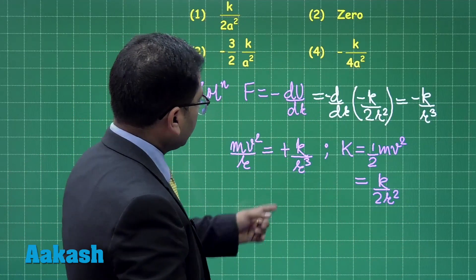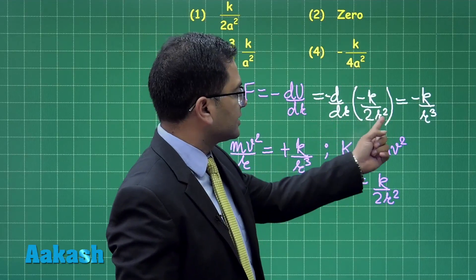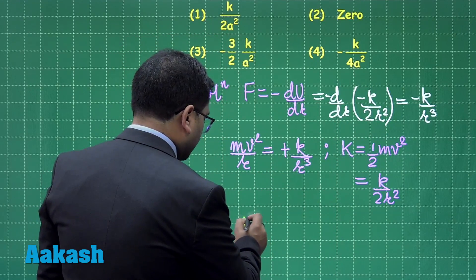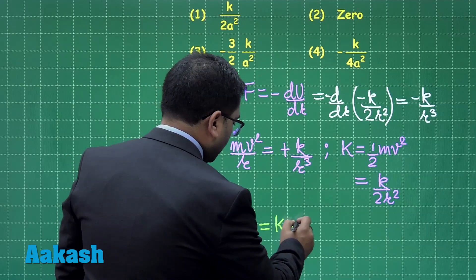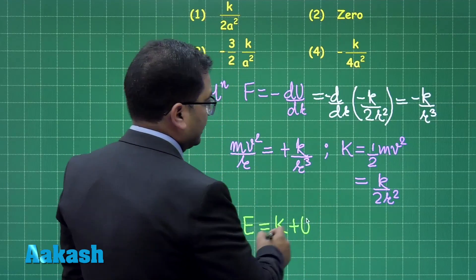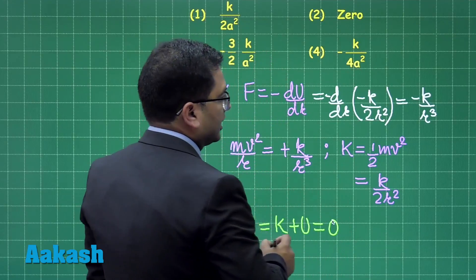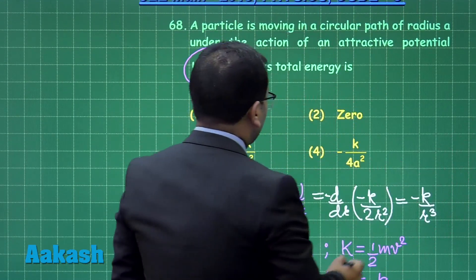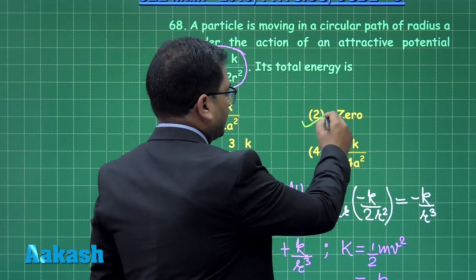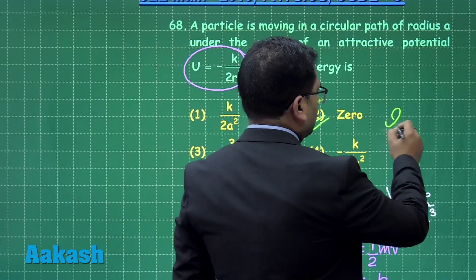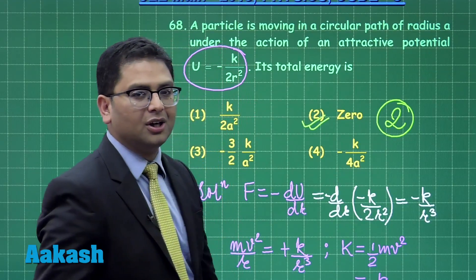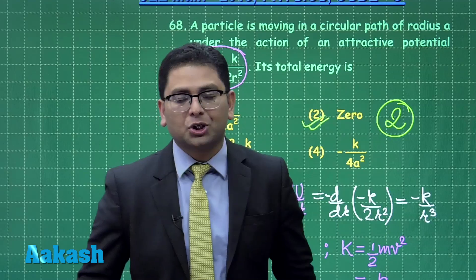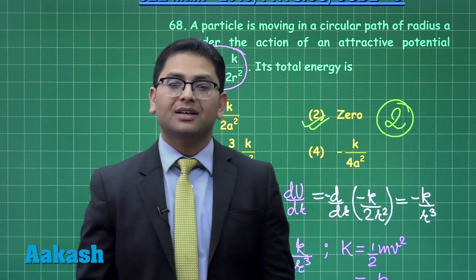The total mechanical energy is the sum of kinetic and potential energy. The kinetic energy is k/2r² and the potential energy is -k/2r², so the total energy is zero. Therefore, the correct option for question 68 is option number two. It looks straightforward but is actually a conceptual question. Let's go to question number 69.